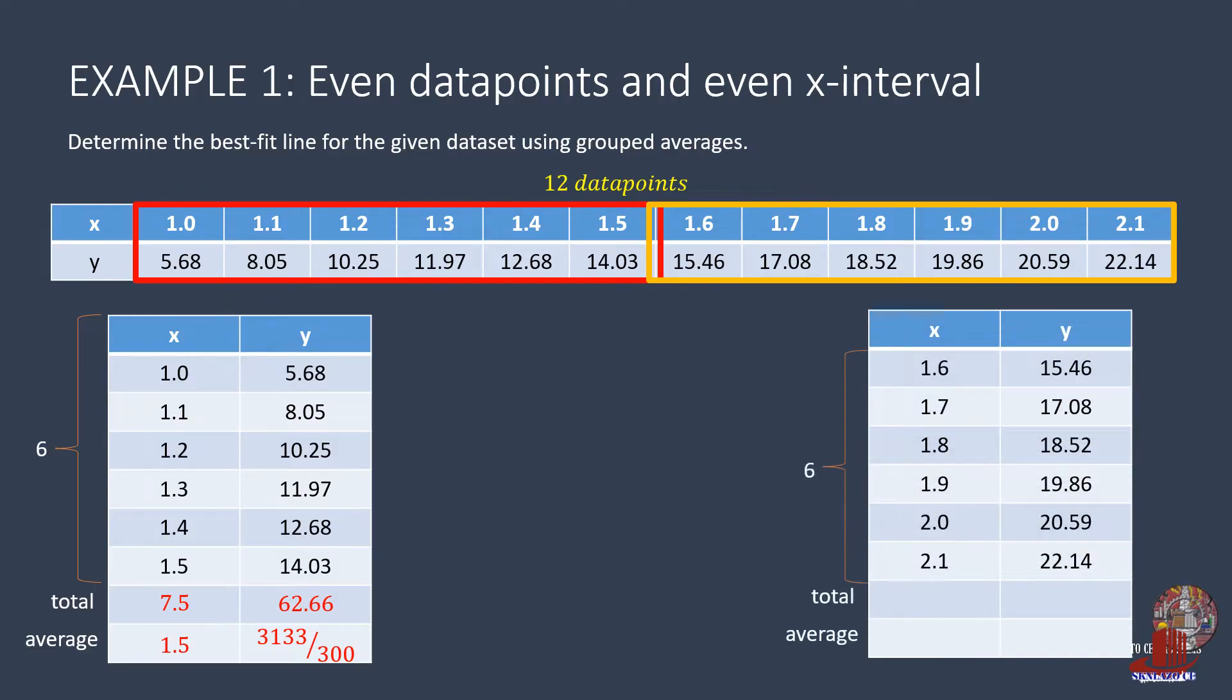The second group also has six data points where x has 1.6 until 2.1 with an interval of 0.1. Adding them all up, the total x is 11.1 and divide this by 6 gives 1.85. The total y comes from 15.46 plus 17.08 plus 18.52 plus 19.86 plus 20.59 and 22.14, which results to 113.65. The average is taken from 113.65 over 6, that is 2273 upon 120.